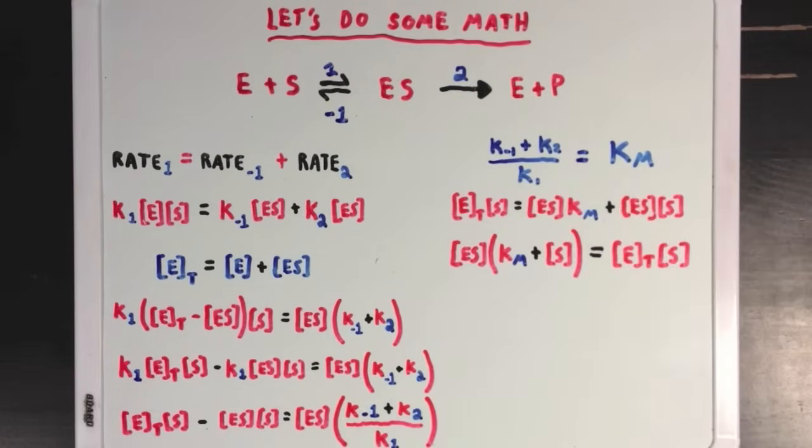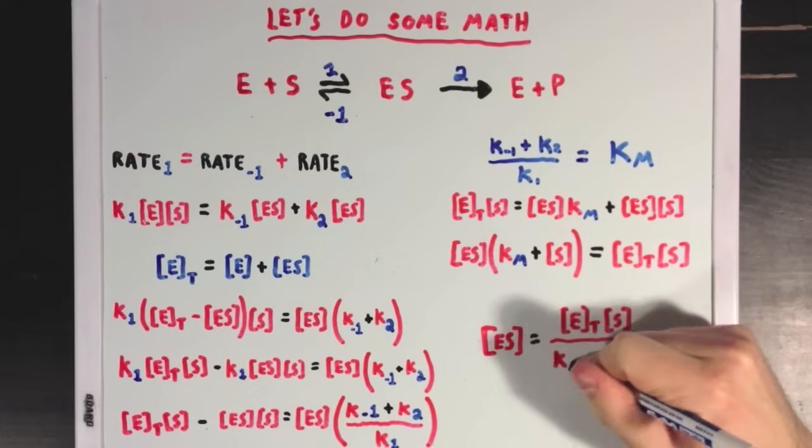In the next line, I've done two things. First, I switched the left sides and right sides of the equation, just to keep things clear. But, I've also factored out the common term ES on our new left side. And then what I'm going to do is divide both sides of the equation by Km plus S, so I can move that term to the right side.